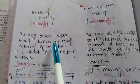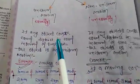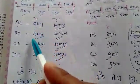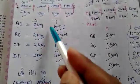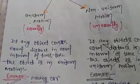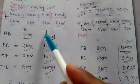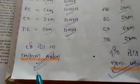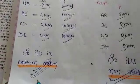According to the definition, if any object covers equal distance — here the object covers 2 km, 2 km, 2 km, 2 km — in equal interval of time — here 10 minutes, 10 minutes, 10 minutes — then the car is in uniform motion.